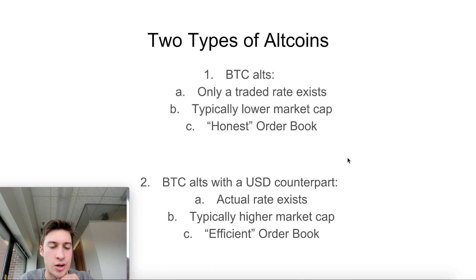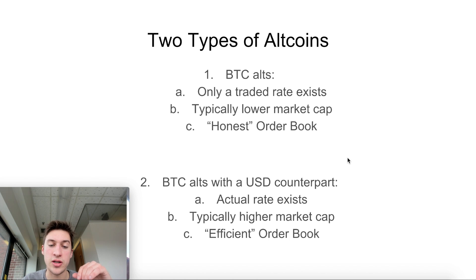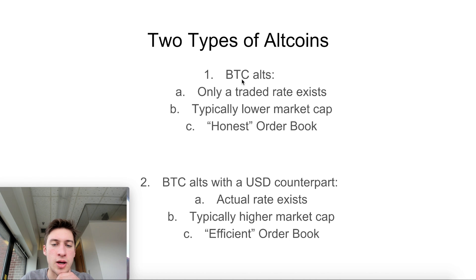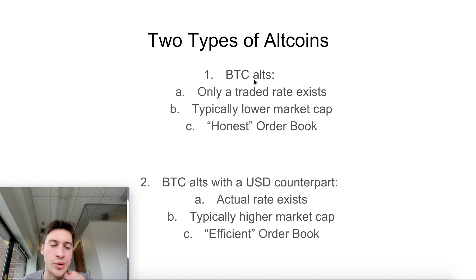Bitcoin altcoins, on the other hand, are quite liquid, especially on exchanges like Poloniex and Binance. With altcoins traded to Bitcoin, we have two main separators: altcoins that are just traded to Bitcoin, and then altcoins that are traded to Bitcoin along with other counterparts as well. A standard Bitcoin altcoin would be like XEM/BTC, BTS/BTC, ADA/BTC — these are just only traded to Bitcoin. They might have a Tether counterpart in the future, but right now it's just Bitcoin.